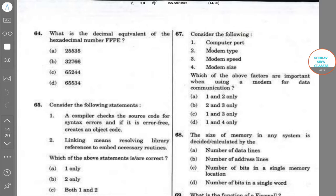Question number 65 says that we have to consider following statements. A computer checks the source code for syntax error and if it is error free, creates an object code. Linking means resolving library references to embed necessary routines. So which of the statements are correct?